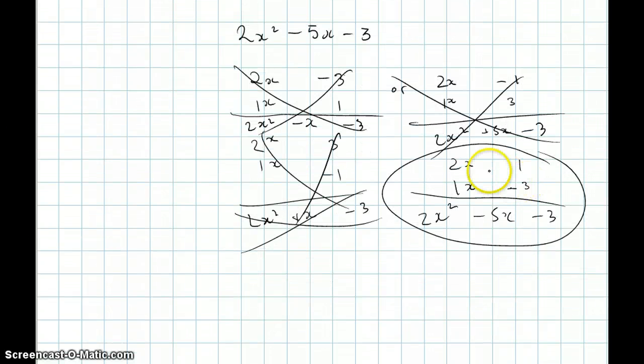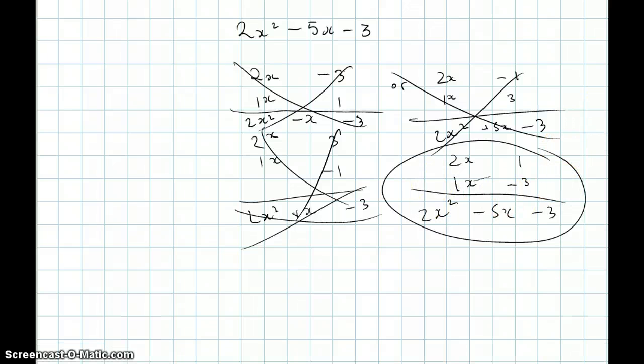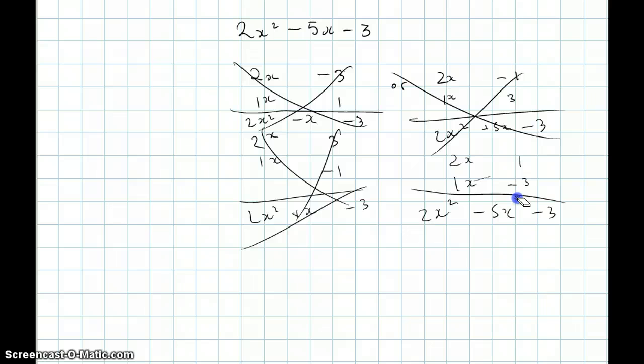After practice and after looking at this, you can kind of understand 2x times minus 3 is minus 6x. So, and then plus x would give us 5x. With practice, it becomes much quicker, and you can narrow down your options much faster. Okay.